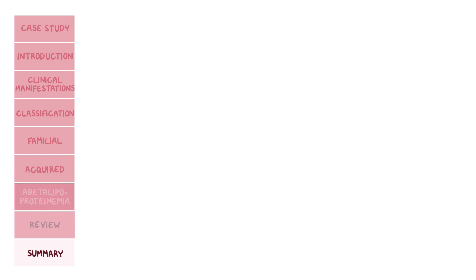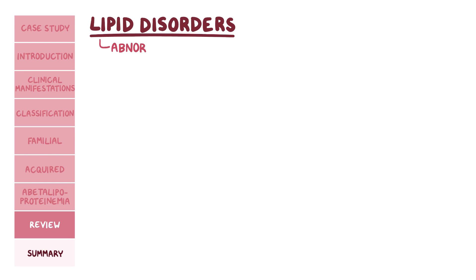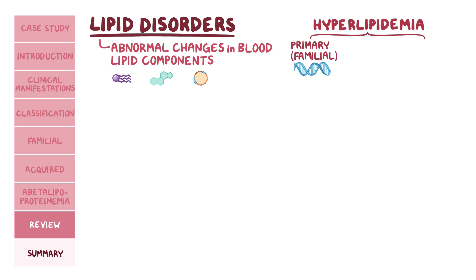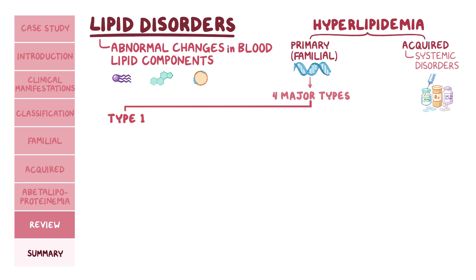As a quick recap: lipid disorders cause abnormal changes in the levels of blood lipid components such as triglycerides, cholesterol, and lipoproteins. Hyperlipidemia can be divided into primary or familial, usually caused by an inherited genetic defect, or acquired, caused by various systemic disorders and medications. Familial hyperlipidemias are subclassified into four major types. Type 1, caused by a deficiency of lipoprotein lipase or its cofactor apolipoprotein C2, results in elevation of chylomicrons.